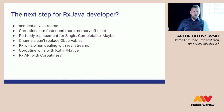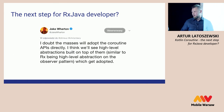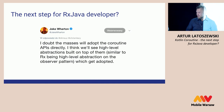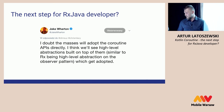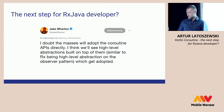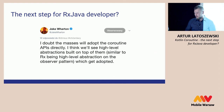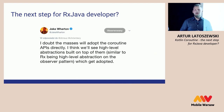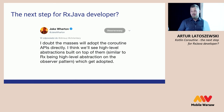So maybe we should have an Rx API built with Kotlin. Jake Wharton's take: "I doubt the masses will adopt the Kotlin APIs directly. I think we'll see high-level abstractions built on top of them, similar to Rx being a high-level abstraction on the observer pattern, which get adopted." I think he's right — it's nice that we share the same opinion.